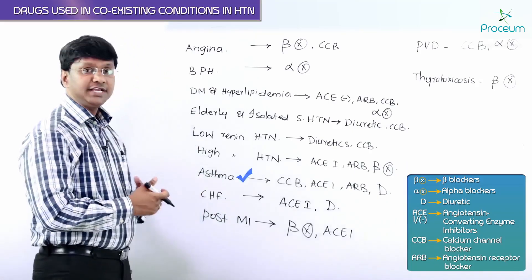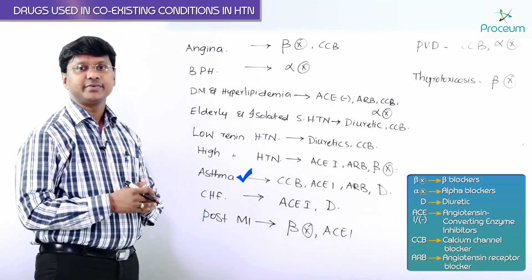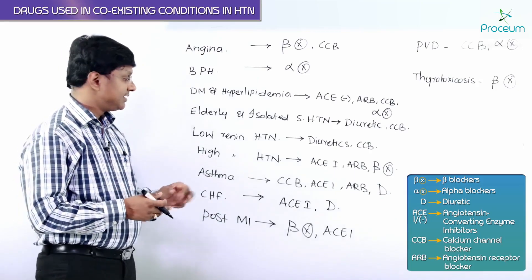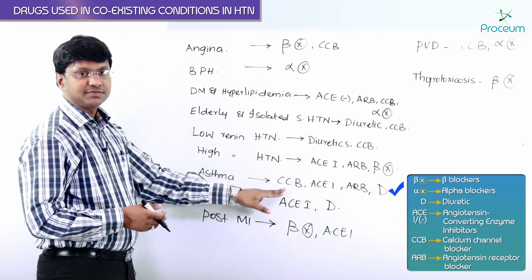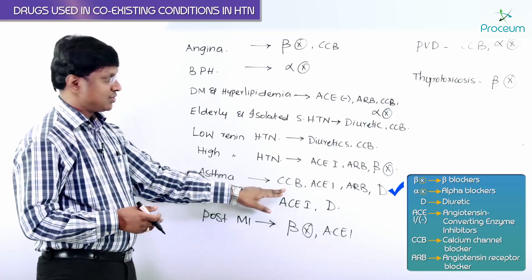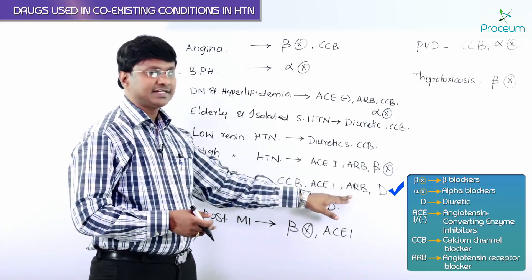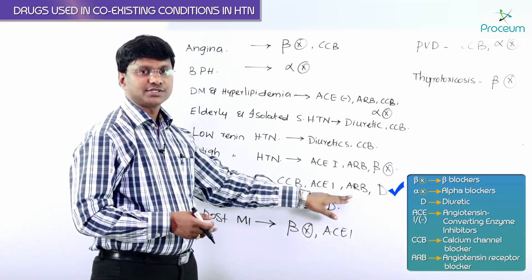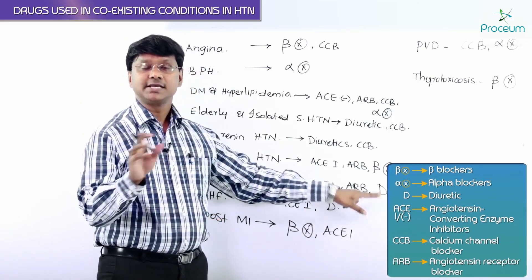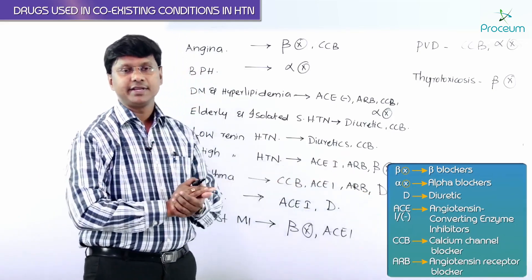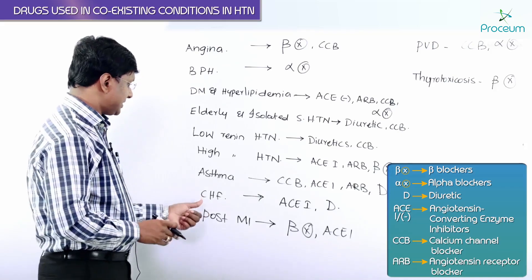If the individual is having hypertension associated with asthma, the preferred drugs would be either calcium channel blockers, ACE inhibitors, angiotensin receptor blockers, or diuretics. Beta blockers are never indicated in patients with asthma.